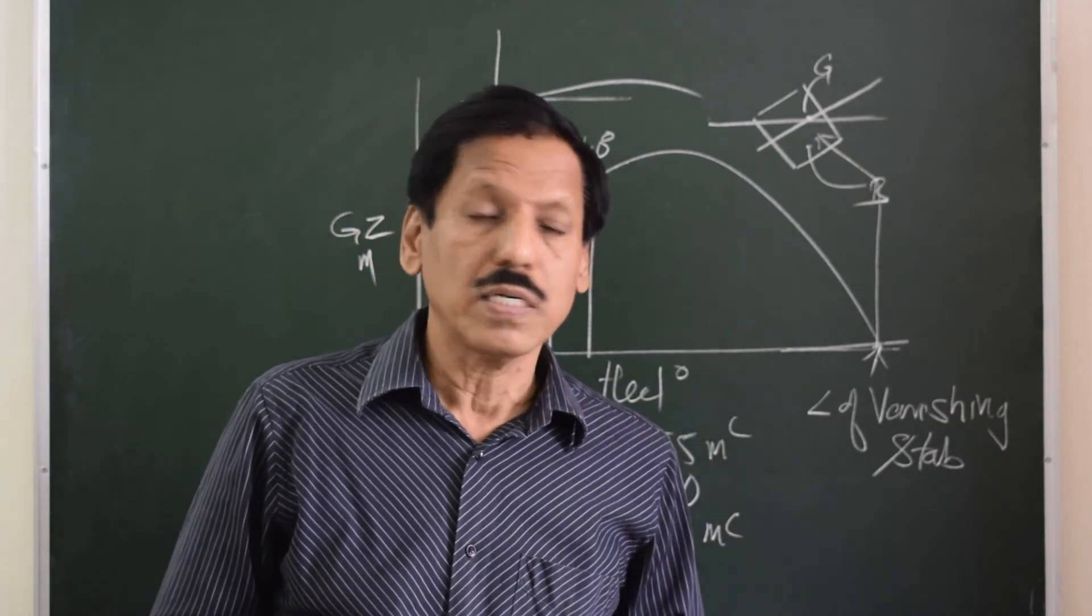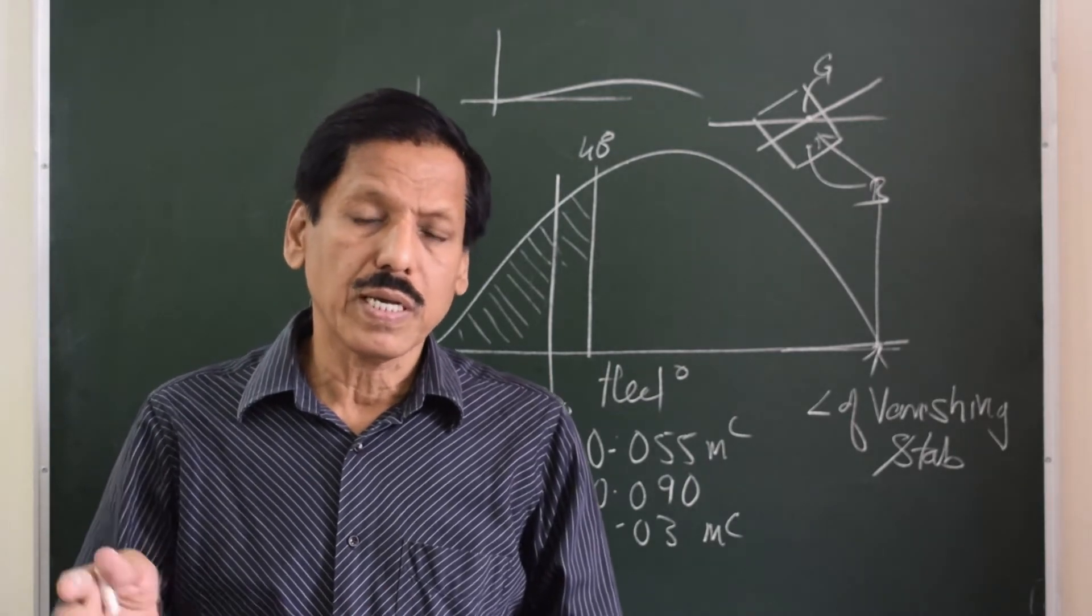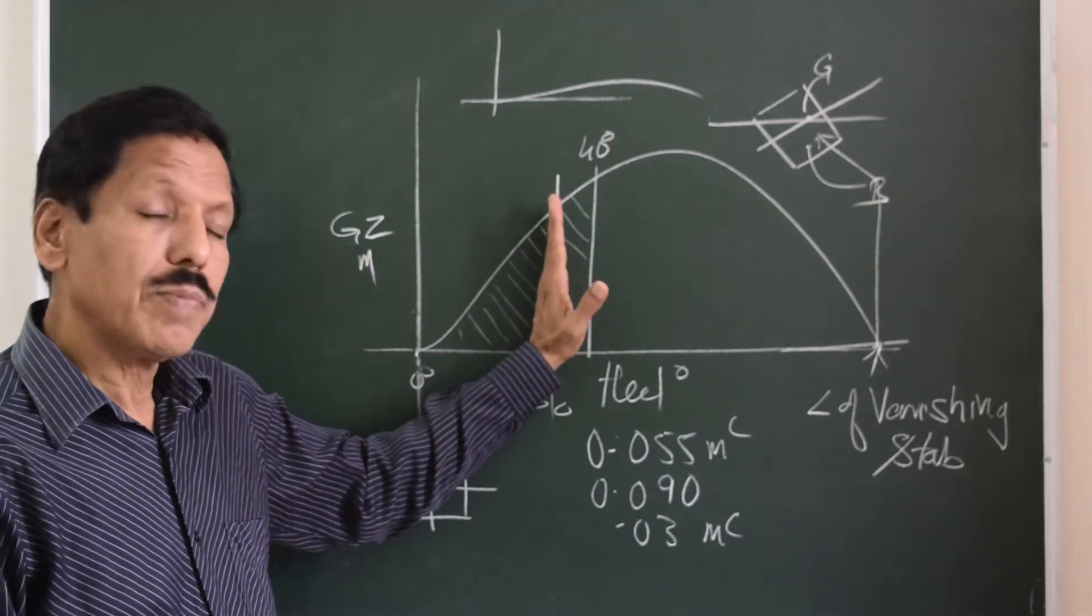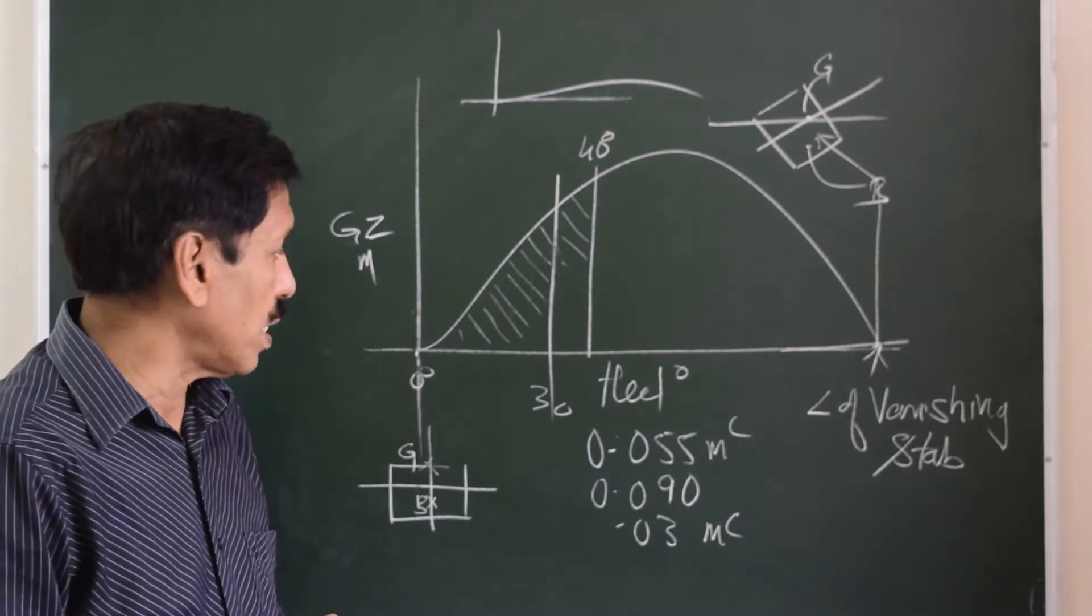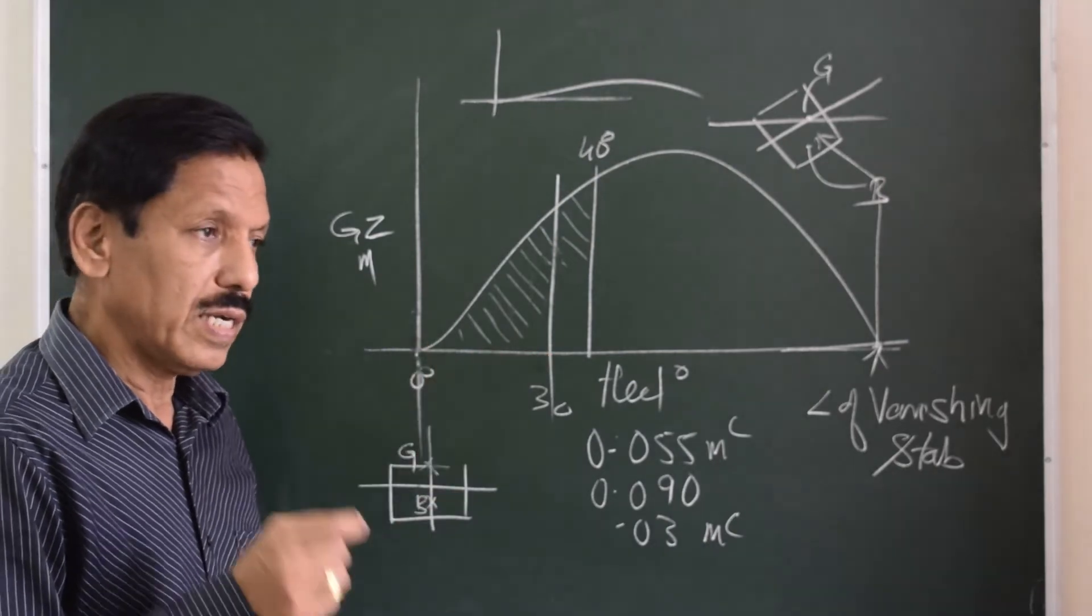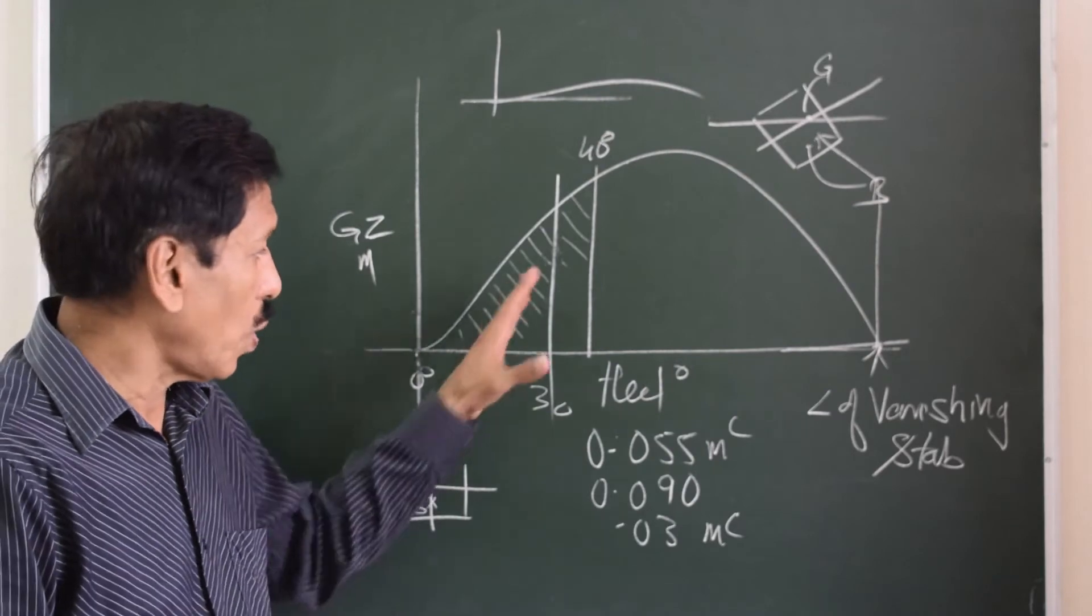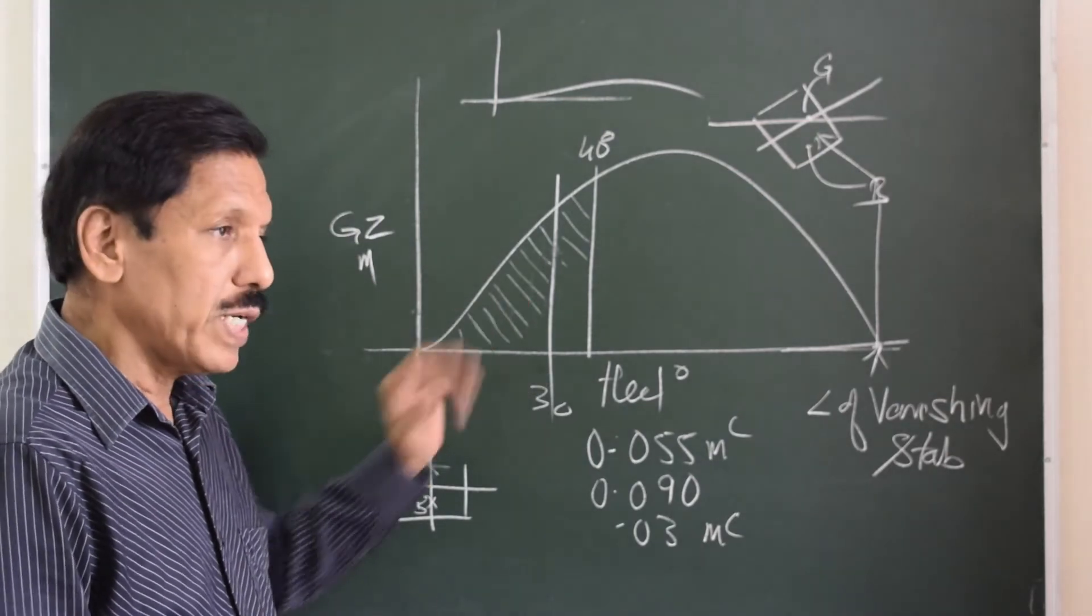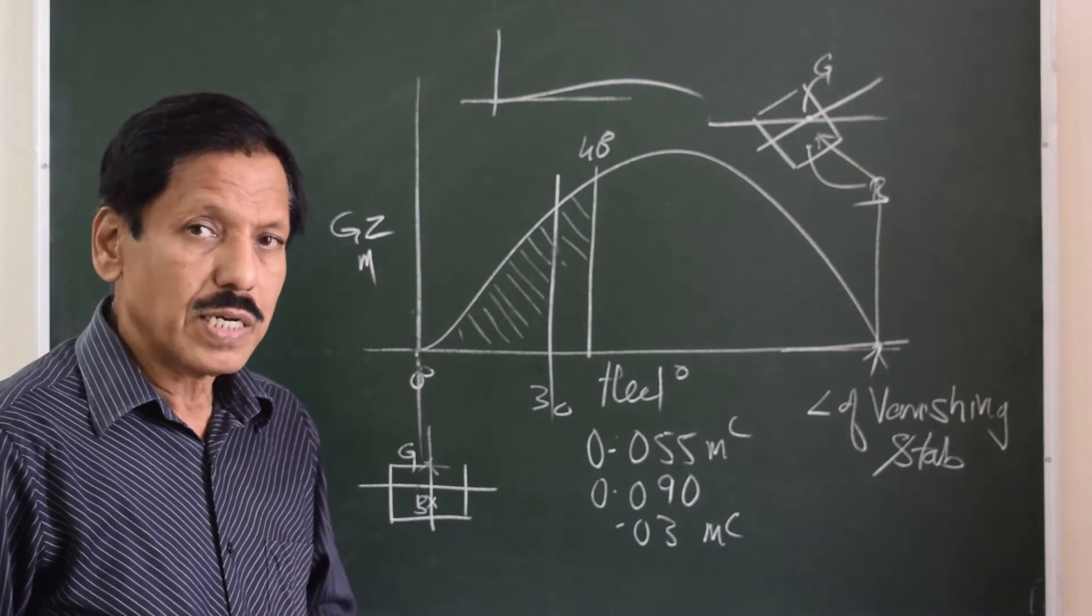What is dynamical stability? Dynamical stability is area under the curve multiplied by displacement. It is like work done or energy required to heel the ship to a particular angle. So what is the difference between dynamical stability and statical stability? If I want to find out the dynamical stability up to 30 degrees, I need to find out the area under the curve up to 30 degrees. So x-axis is heel, so unit to be used is degree divided by 57.3, that is radian. Y-axis is meter, so area that is obtained is in meter radians.